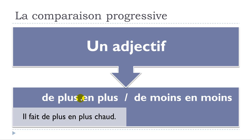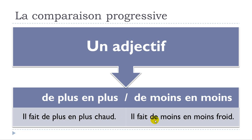So let's see two examples now. The first one: il fait de plus en plus chaud. You can see that it's really simple to make it, because basically you've got your adjective here, and just before it you will have to put de plus en plus, or then de moins en moins. It is really, really simple.